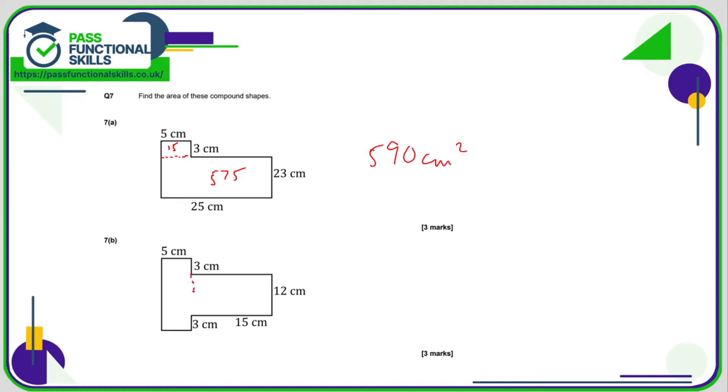On this one here, I'm just going to turn it into two rectangles like this. So I've got a 12 by 15. 12 times 15 are 180. And here I've got a 5 by, we don't know this side length here, but we know it's 3 plus 12 plus 3, which is 18. And 5 times 18 is 90. 90 plus 180 is 270 square centimeters.